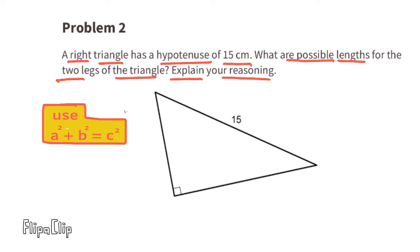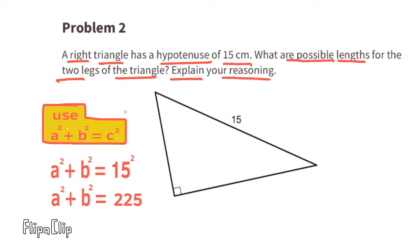Problem number two: a right triangle has a hypotenuse of 15 centimeters. What are possible lengths for the two legs of the triangle? Explain your reasoning. The hypotenuse is the side length of a right triangle that's opposite the right angle — it's also labeled c squared in the Pythagorean theorem. The hypotenuse of this right triangle is 15 centimeters, so a squared plus b squared equals 15 squared, which is 225.